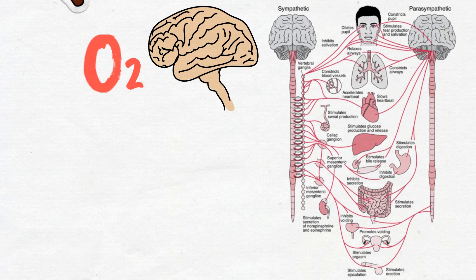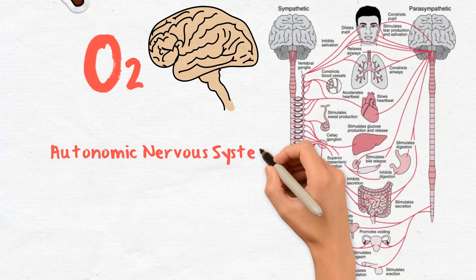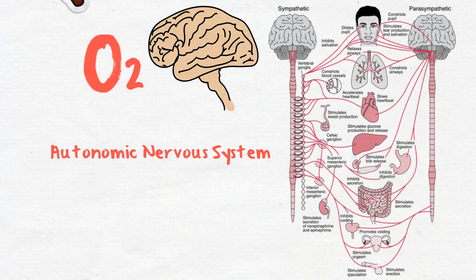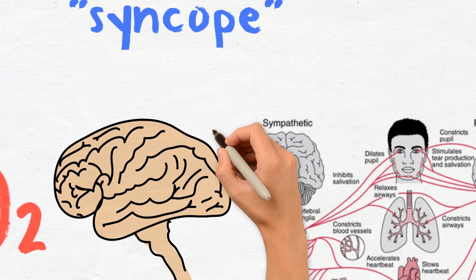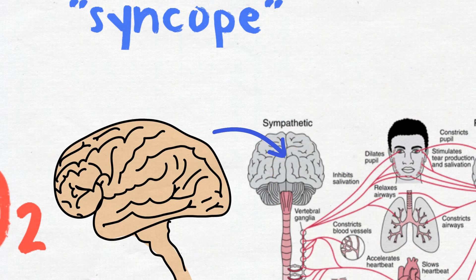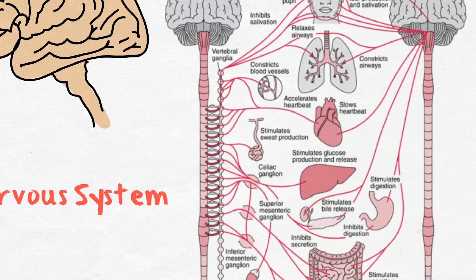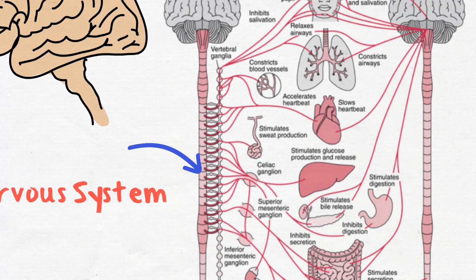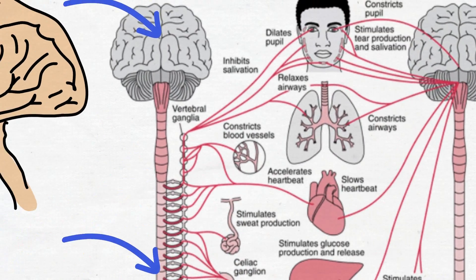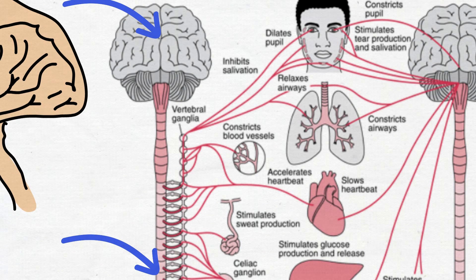Fainting is most commonly caused by a temporary malfunction in the autonomic nervous system. This type of fainting is sometimes known as neurally mediated syncope. The autonomic nervous system is made up of the brain, nerves, and spinal cord. It regulates automatic bodily functions such as heart rate and blood pressure.